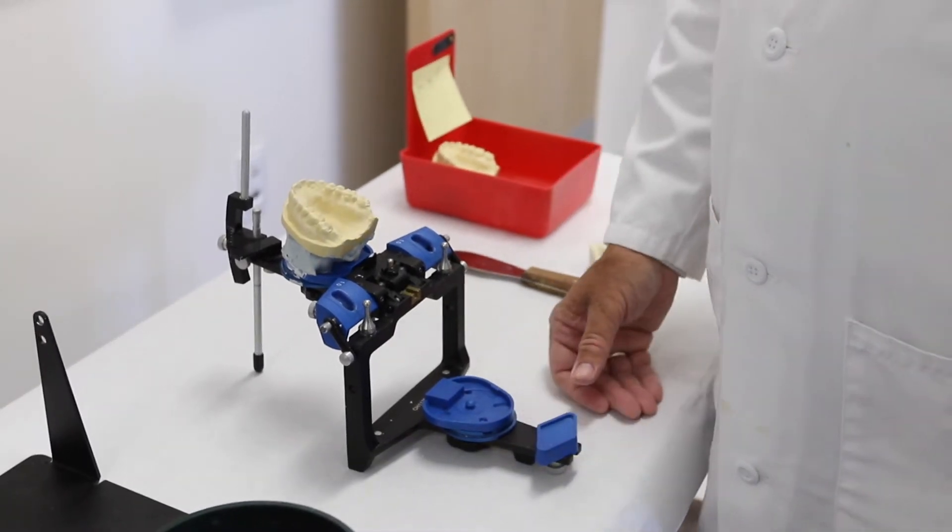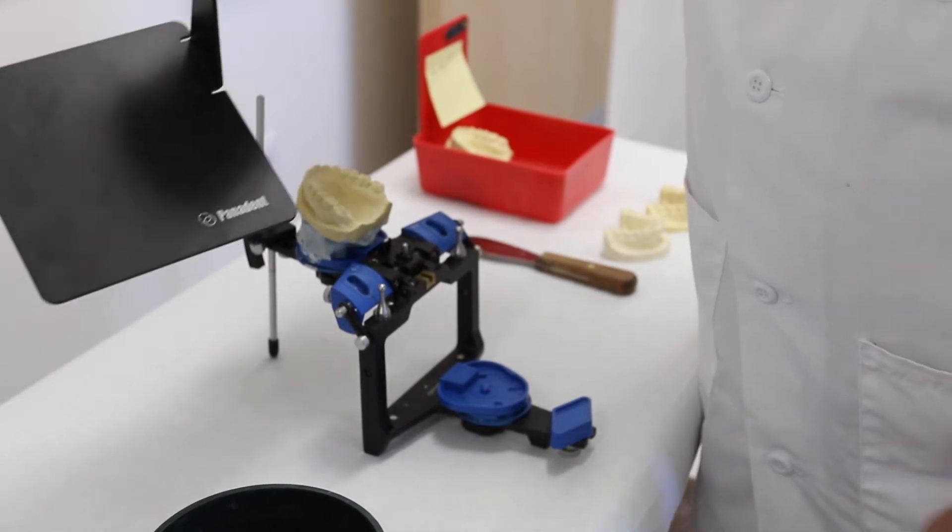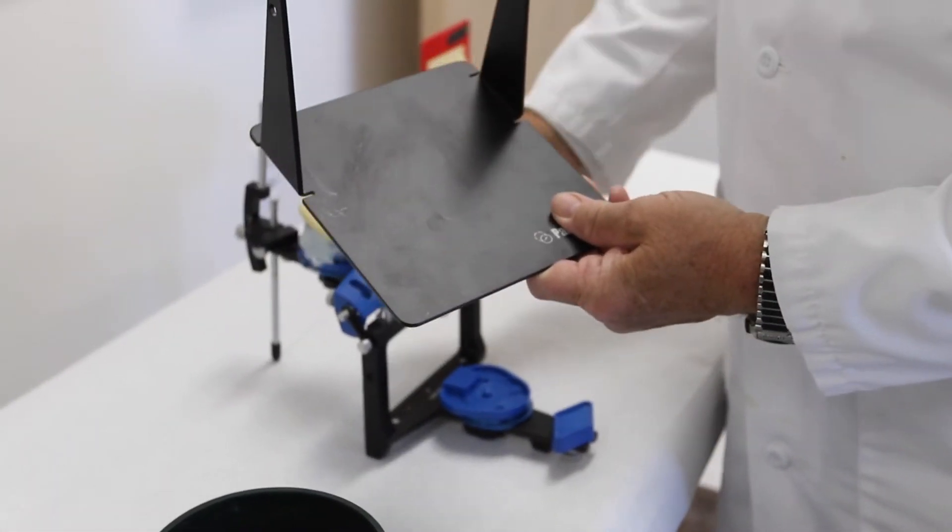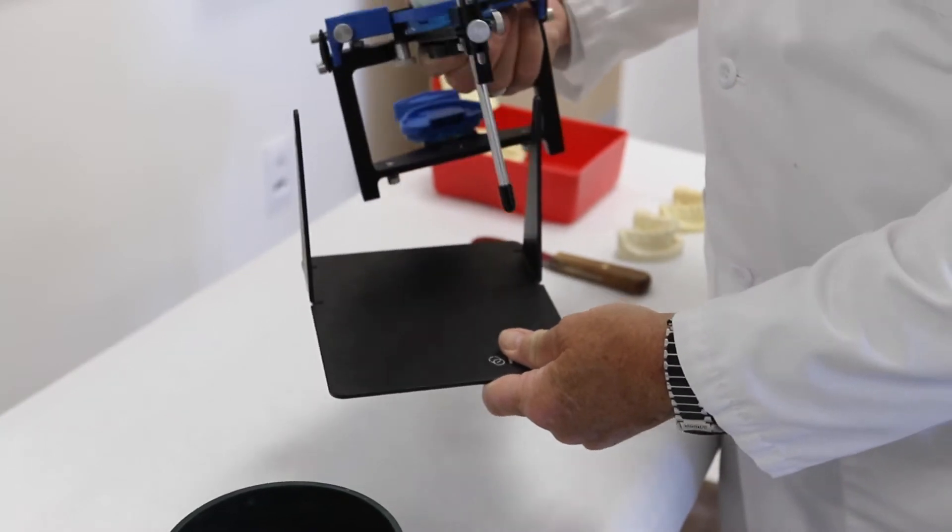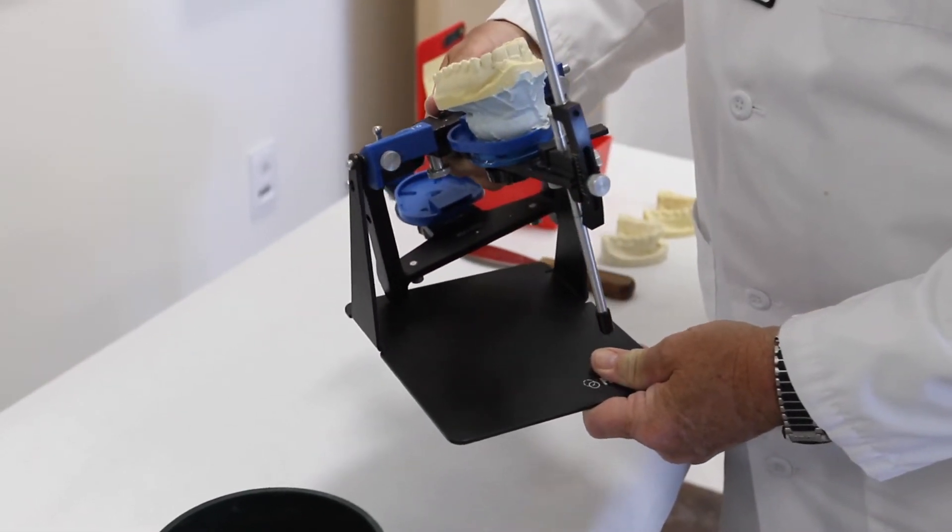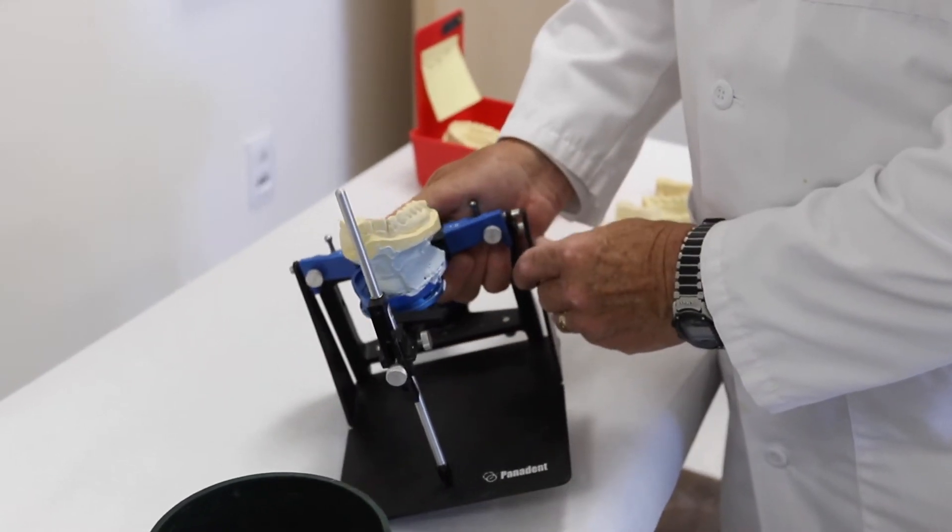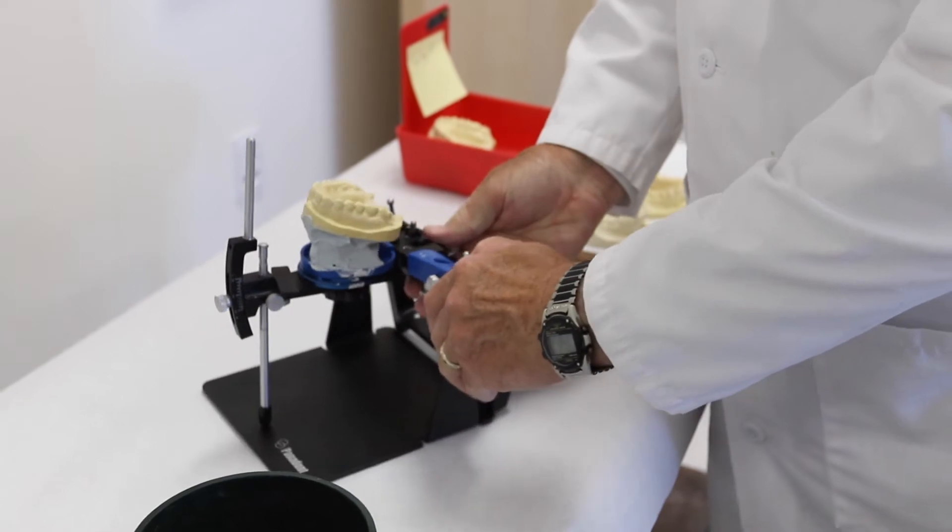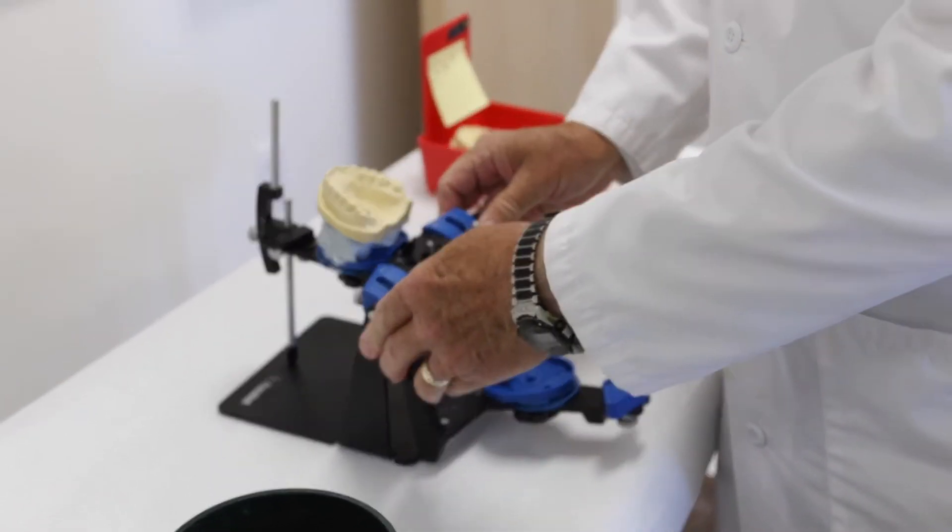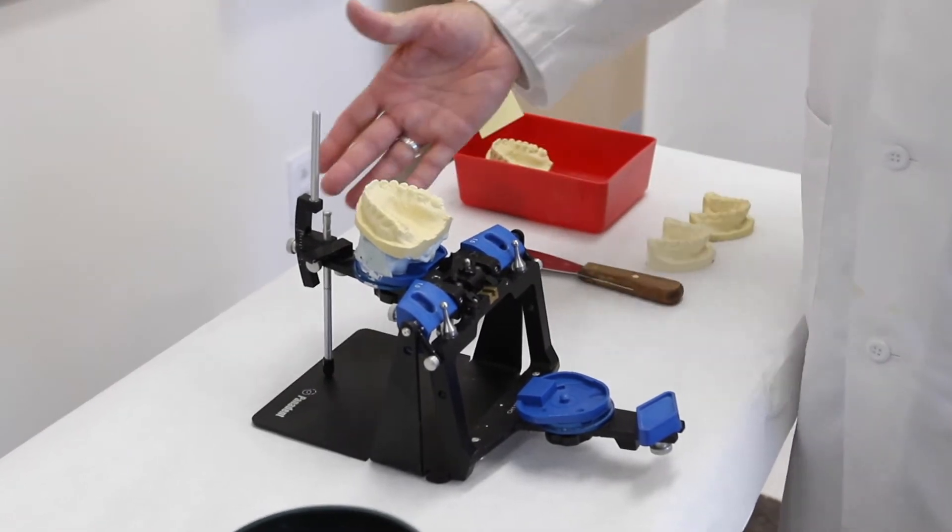At this point now you need to incorporate the use of the mounting stand. You do that by taking the model and carefully on the articulator, carefully engaging the pin by the analog at the condyle area, fossa area, and also on the other side.